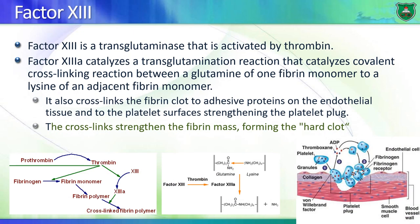In addition to cleaving fibrinogen into fibrin, thrombin can act on another protein: factor 13, a transglutaminase. What factor 13 does is form a covalent cross-link between a glutamine on one fibrin monomer and a lysine on another fibrin monomer, forming a hard clot. Because of the covalent cross-linking between different fibrin molecules, this clot not only contains the fibrin network but also entraps platelets inside, forming what is known as a platelet plug.